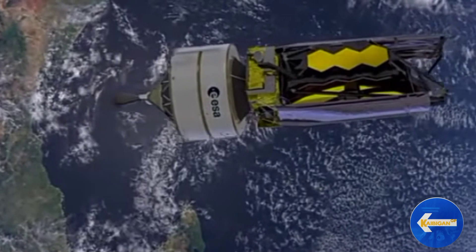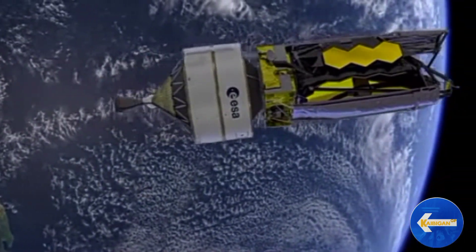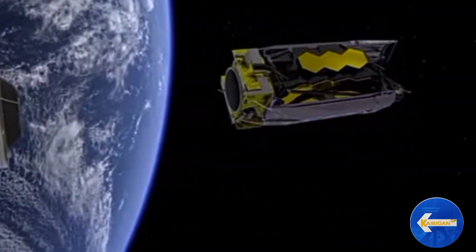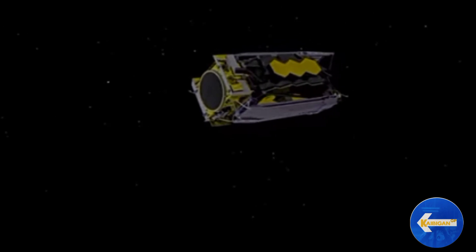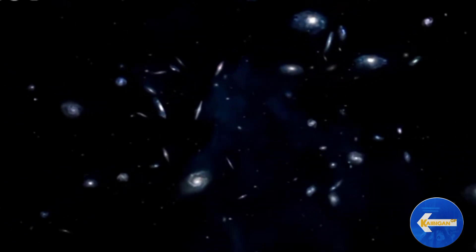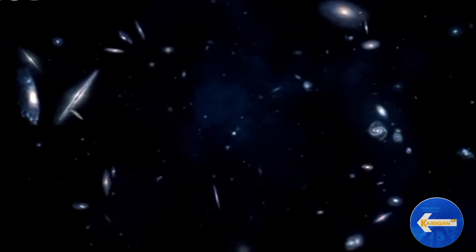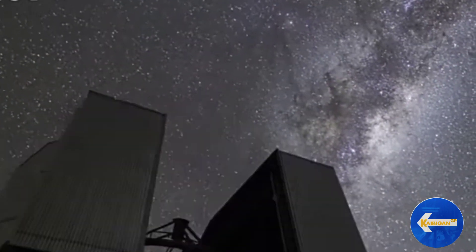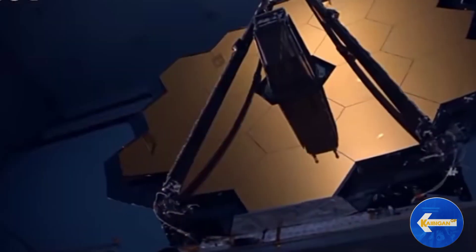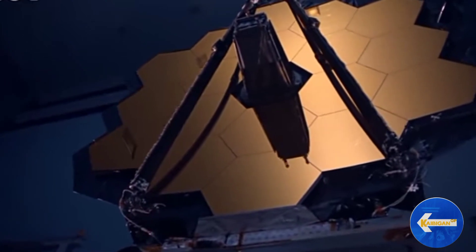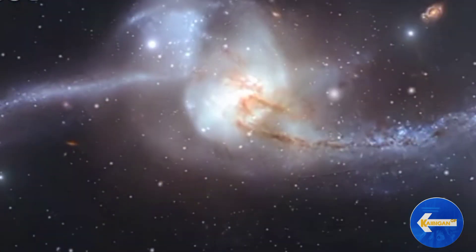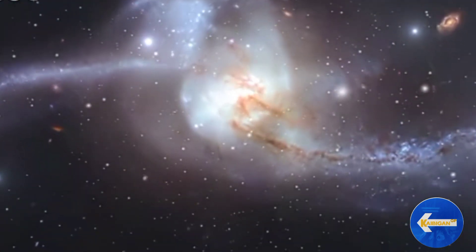Sa wakas, nailunsad na ang James Webb Telescope sa kalawakan. Ang layunin nito upang balikan ang 13.5 bilyong taon na makita ang mga unang galaksi sa kalawakan at maghahanap ng buhay sa ibang mga planeta kung anong meron nandoon. Sa panahon ngayon ay mas lumawak ng malaki ang mga sayantis na paraan.